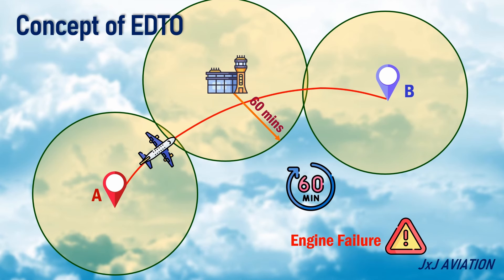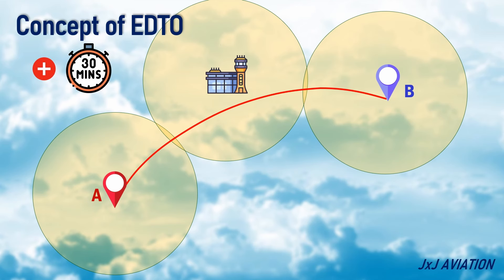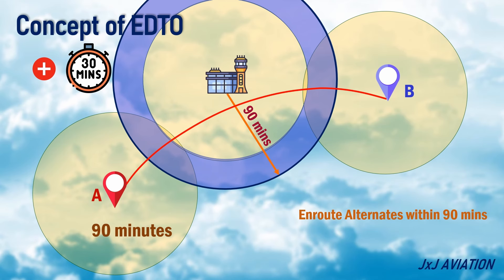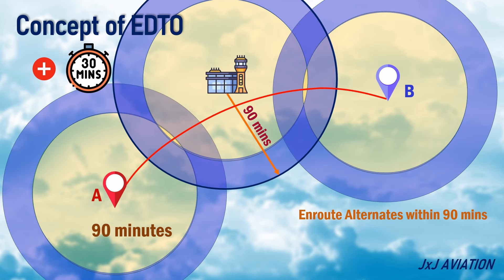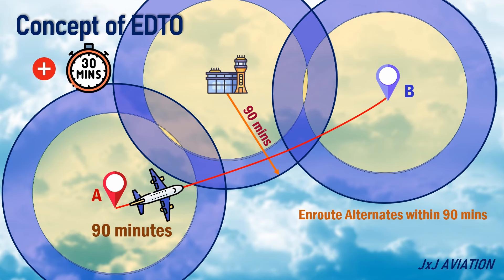If the aircraft has an EDTO approval, the route can be shortened. An aircraft will get an EDTO approval in increments of 30 minutes from the threshold time. Let's consider an aircraft having an EDTO approval of 90 minutes. This means, in the event of a failure on the aircraft, the en-route alternate should be available within 90 minutes instead of 60 minutes. So, if we plot 90-minute circles from different airports, the route from A to B will look like this — a shorter route, which means less flying time and less fuel.